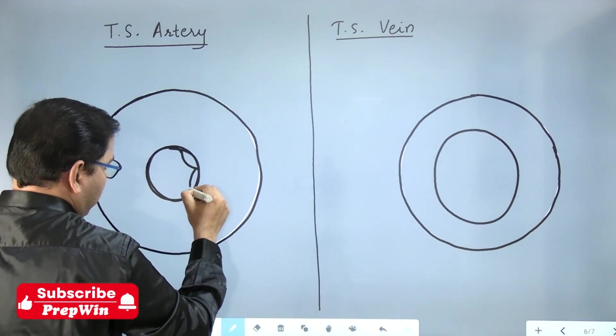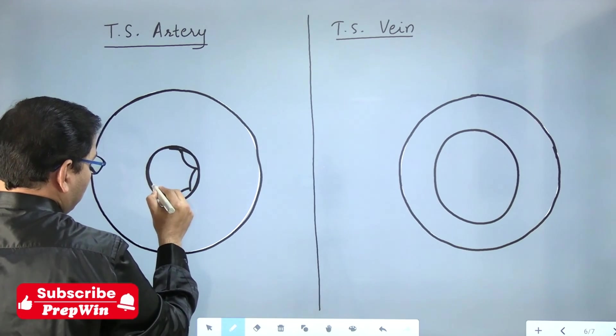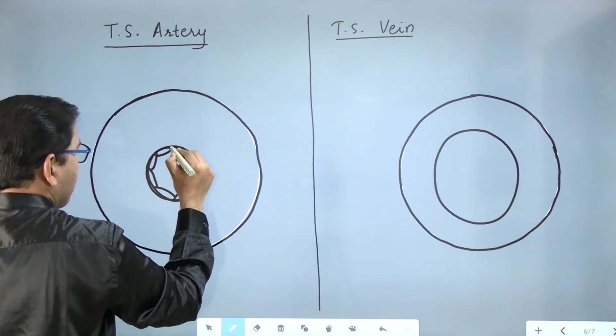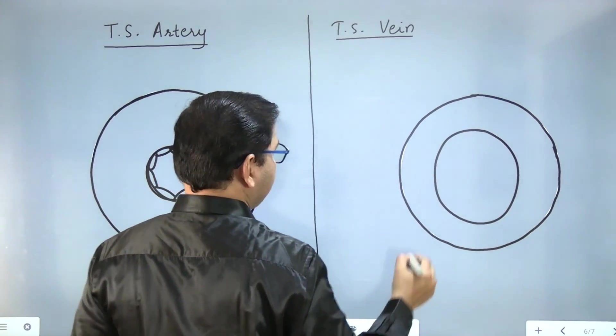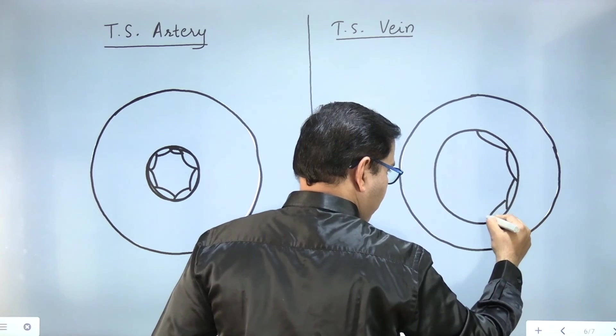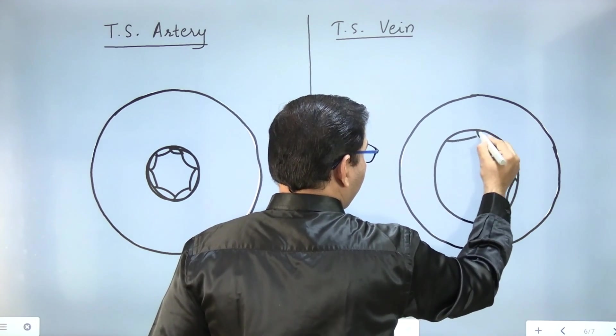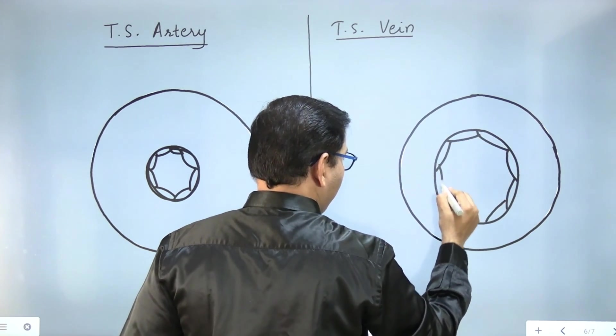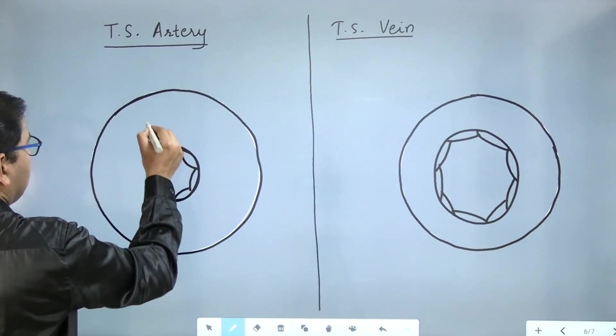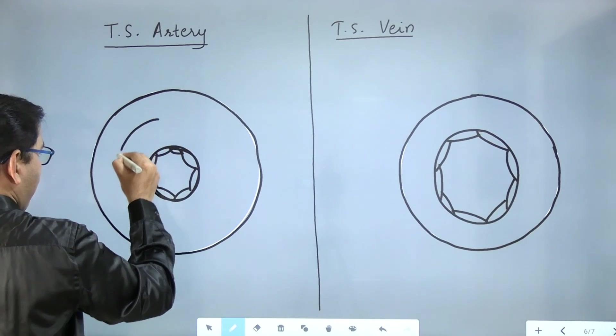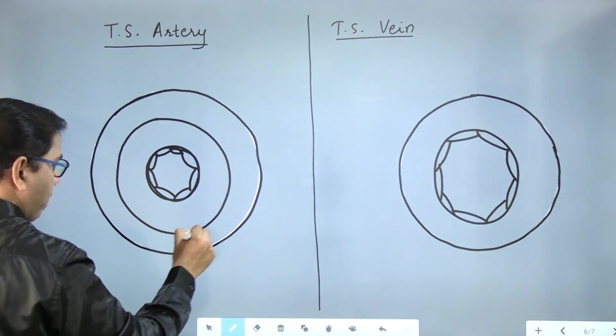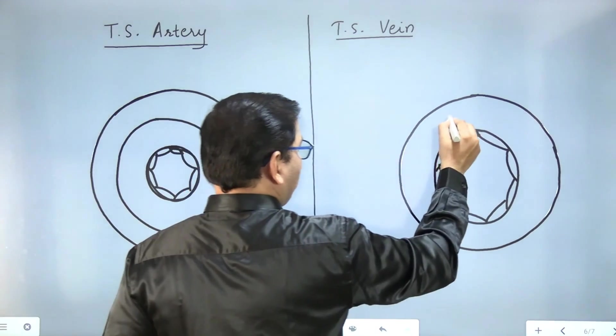This is the innermost layer. So we will draw it like this. Here as well. Then the middle layer. Here also the middle layer.